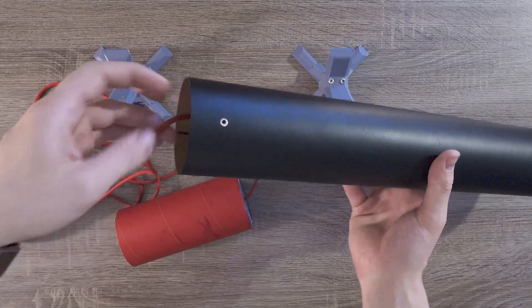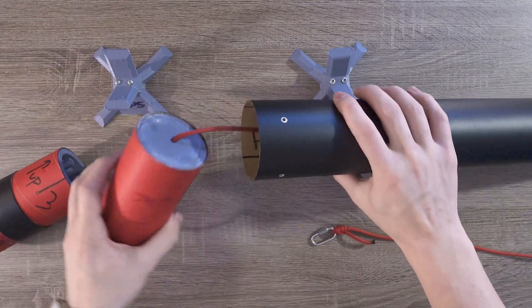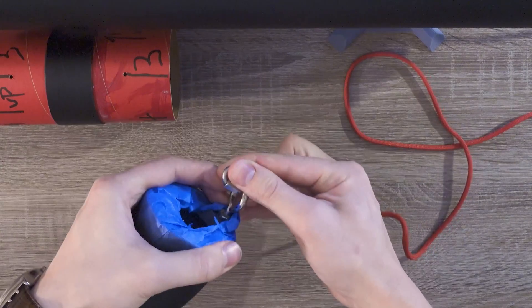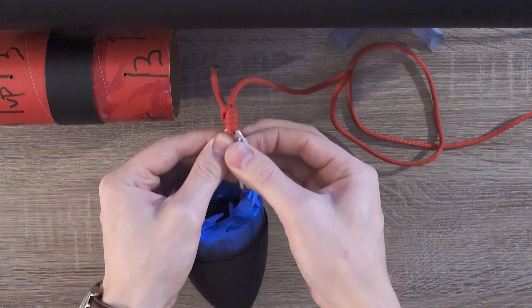We'll thread the upper part of the shock cord through the upper part of the airframe. At this point, we can also put the piston inside the upper part of the airframe. Now we'll unscrew the quicklink, attach it to the I-bolt on the nose cone, and then screw it back down.